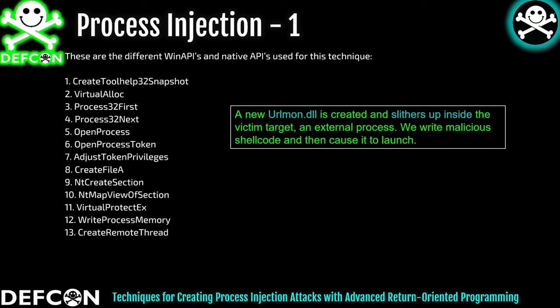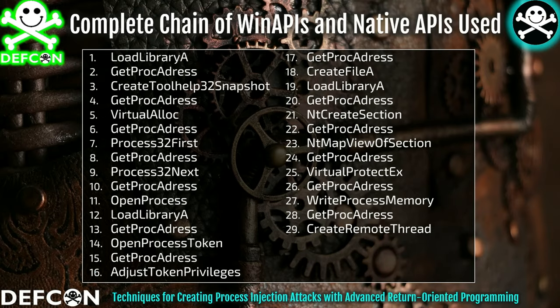Now let's get into an actual process injection technique, based on something presented at Hack in the Box Amsterdam 2023 — but that was Windows syscalls and shellcode, whereas this is return oriented programming using Windows APIs and native APIs. The plan is to create a new URL, slither it inside a victim target external process, write shellcode there, and cause it to launch. The complete ROP chain has 29 gadgets — an extraordinary amount; we're not familiar with any ROP chain in the Windows ecosystem with anywhere near this level of gadgets. It would be far more without the technique of storing and retrieving certain values.